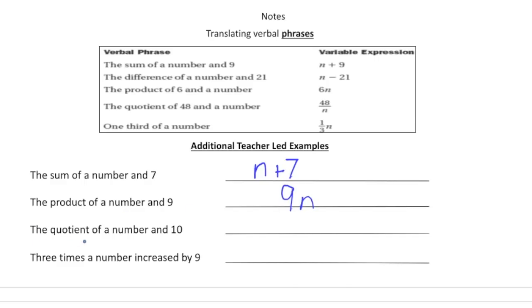The next one, the quotient of a number and ten. Well quotient is associated with division. So this is going to be n divided by ten, or we could write it as a fraction n divided by ten.